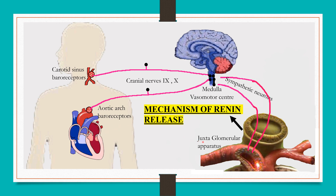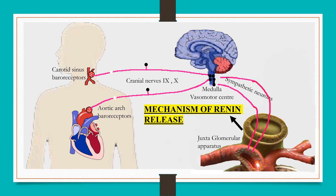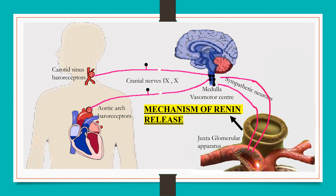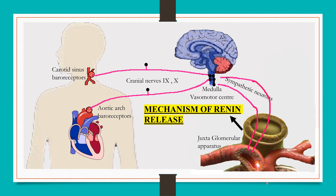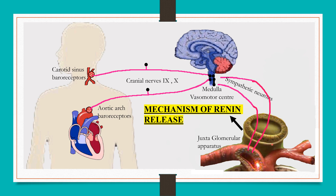The renal mechanism of renin release involves the juxtaglomerular apparatus, which consists of macula densa cells and juxtaglomerular cells. Here we have the afferent arteriole, Bowman's capsule, which continues as the PCT and loop of Henle, that turns to form the DCT where you find macula densa cells.